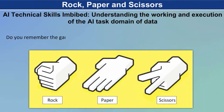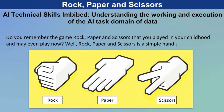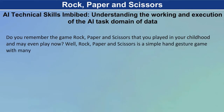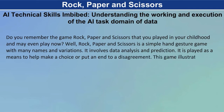Do you remember the game rock, paper and scissors that you played in your childhood and may even play now? Rock, paper and scissors is a simple hand gesture game with many names and variations. It involves data analysis and prediction. It is played as a means to help make a choice or put an end to a disagreement.